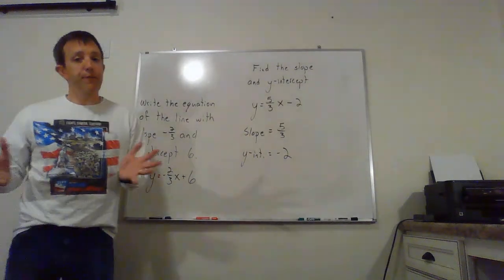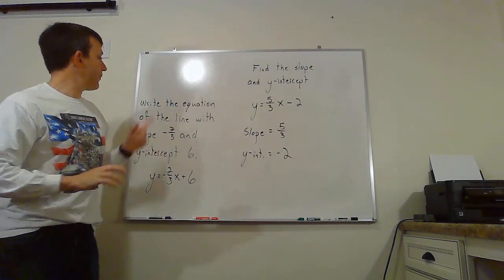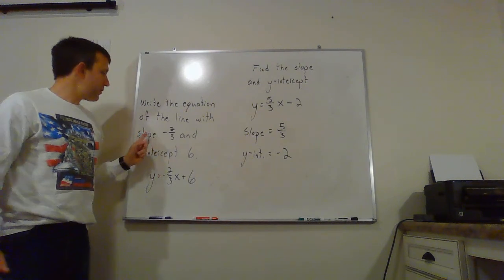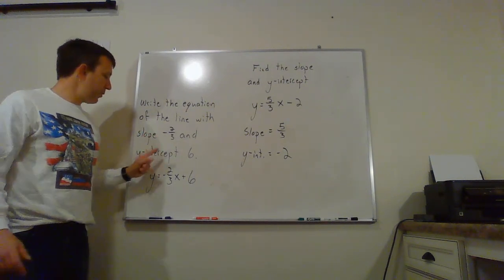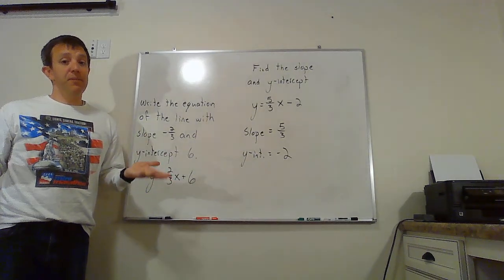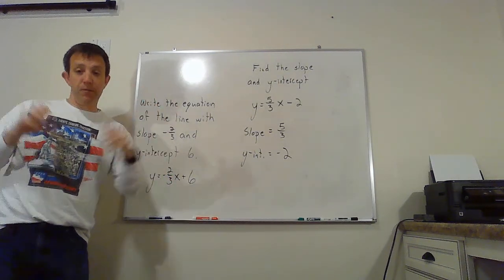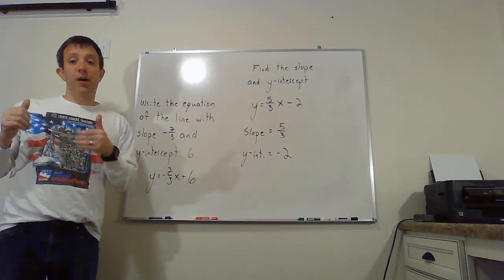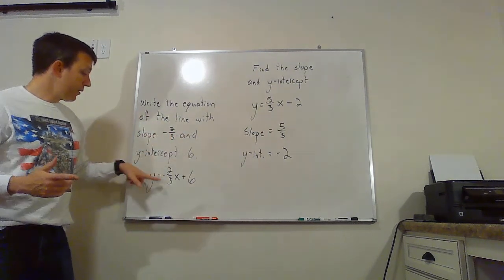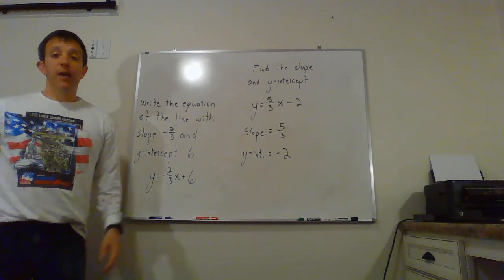Here are our first two examples. We'll see one more example after this, but it'll be on the next board. For this board, first we want to write the equation of the line with slope negative 2 thirds and y-intercept 6. All we have to do is fill in the m and the b. We had that formula, that standard equation that we saw on the last board, y is equal to mx plus b. We're just going to put in negative 2 thirds in place of the m, and 6 in place of the b. Done!